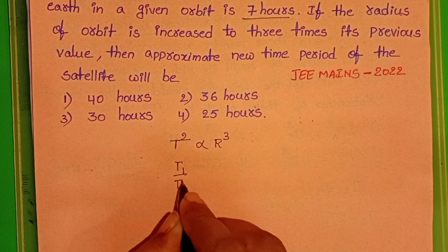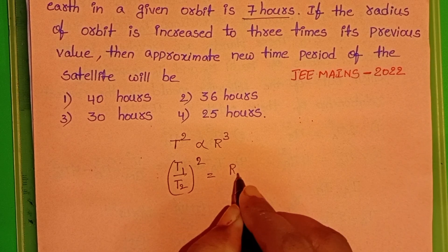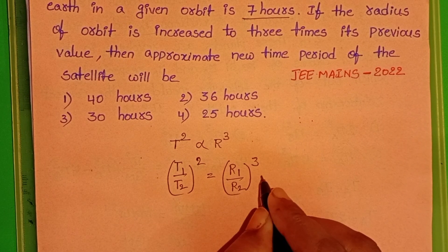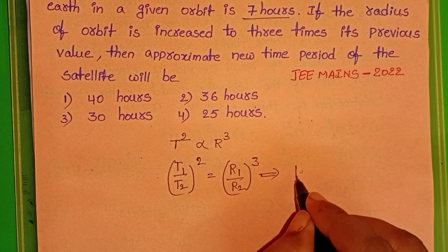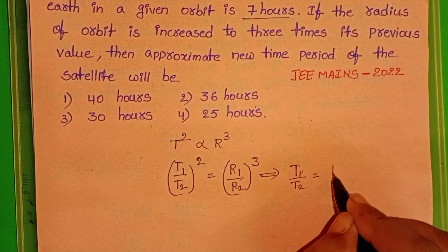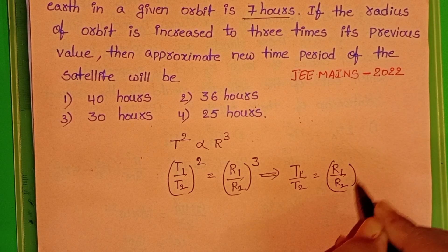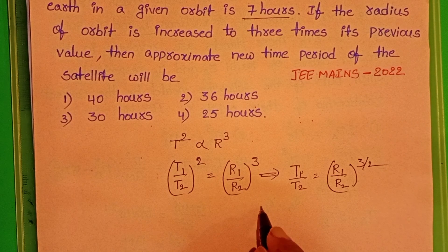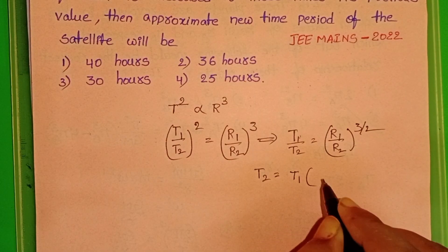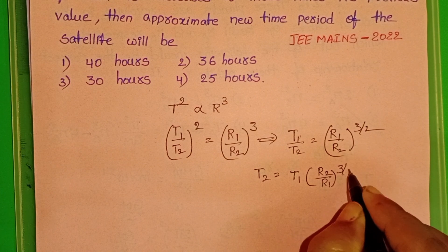T1 by T2 whole square equals R1 by R2 whole cube. From this, T1 by T2 equals R1 by R2 to the power 3 by 2. Therefore, T2 equals T1 into R2 by R1 whole power 3 by 2.